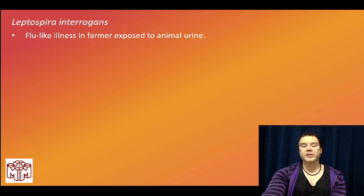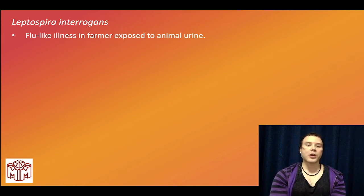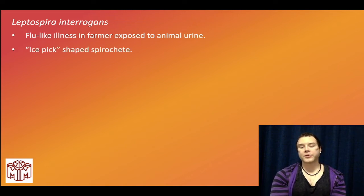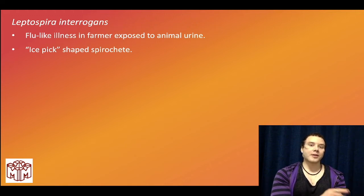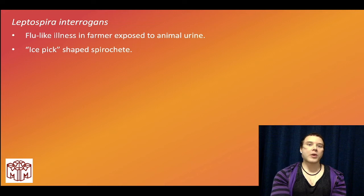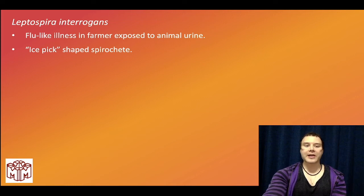Leptospira interrogans causes a flu-like illness in a farmer exposed to animal urine; it's ice-pick shaped. USMLE may give an easy syphilis presentation — painless chancre in a young sexually active patient — and then ask which other organism is most taxonomically and morphologically similar. Leptospira would be listed as an answer, as would Borrelia for Lyme disease, since they're all spirochetes.